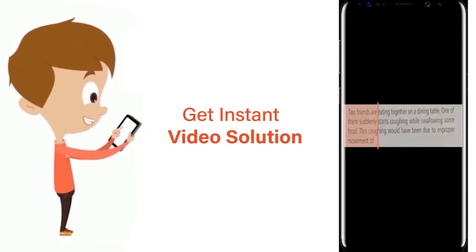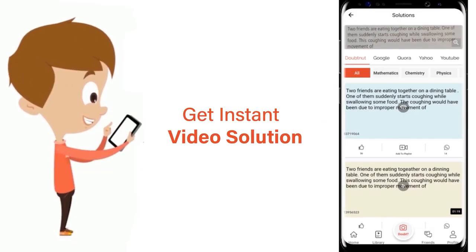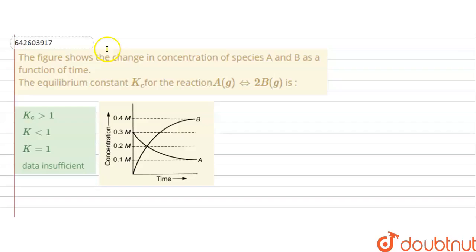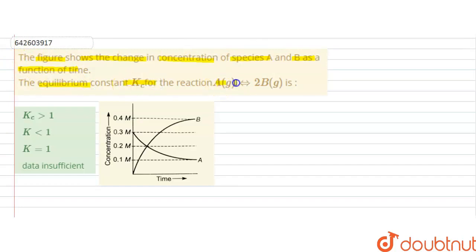The question shows a figure with the change in concentration of species A and B as a function of time. The equilibrium constant Kc for the reaction A to 2B needs to be determined.